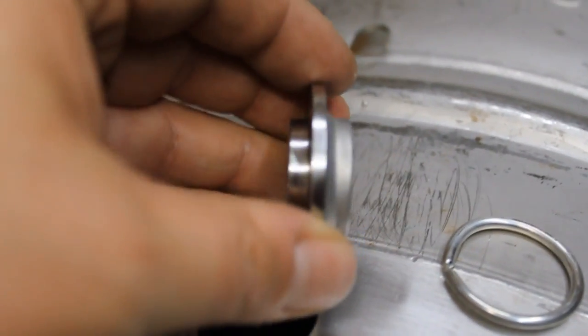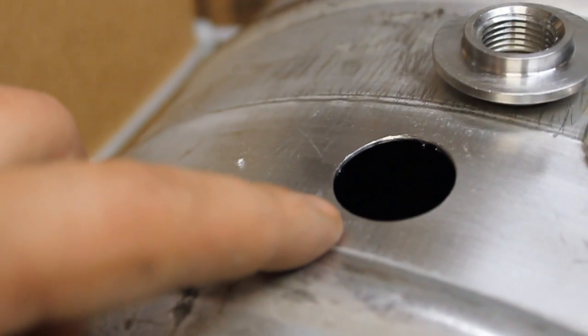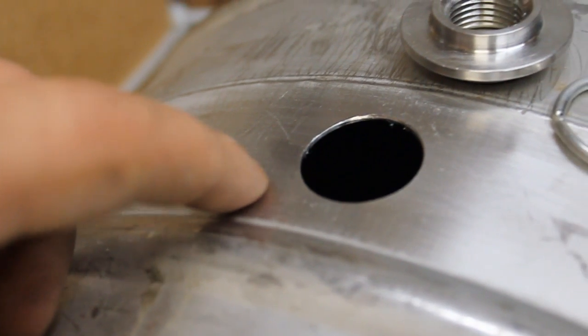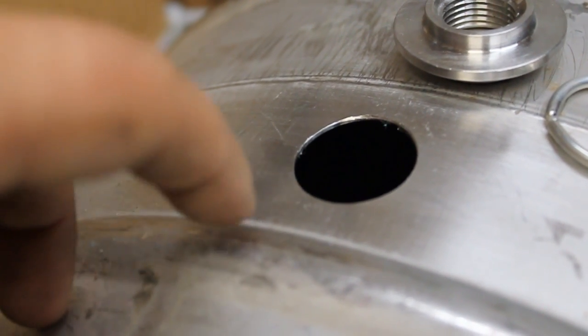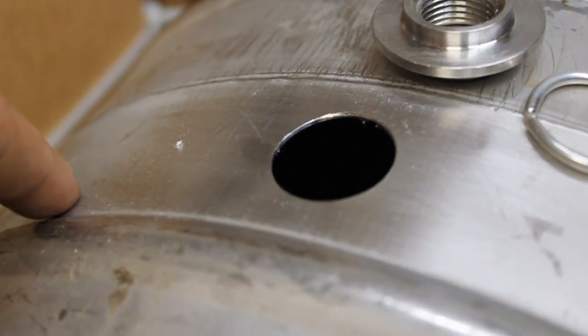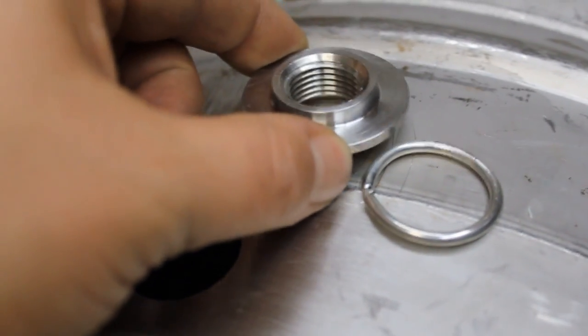This is what the welding spud looks like. I drilled an inch and an eighth or one and one eighth inch hole in the quarter keg. I cleaned up the burrs and scuffed up the surrounding surface area with some sandpaper. I also scuffed up the back of the spud.